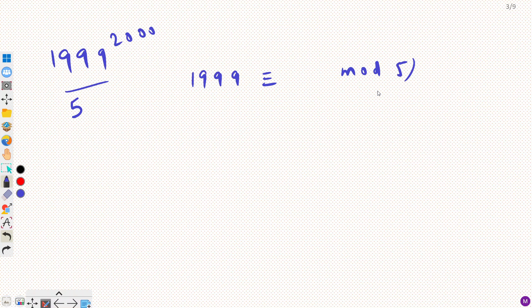So let us apply this. So we have 1999 raised power 2000 and you have to divide it by 5. So 1999 congruent to mod 5. Now what would be my remainder here. If you divide by 5 then this would give you 4 right.